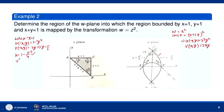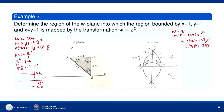We can easily trace this parabola: if u > 1, then v² is negative so the curve doesn't exist for u > 1. When u = 1, v = 0 (vertex). When u = 0, v² = 4 so v = ±2. So the parabola v² = 4(1 - u) opens leftwards.